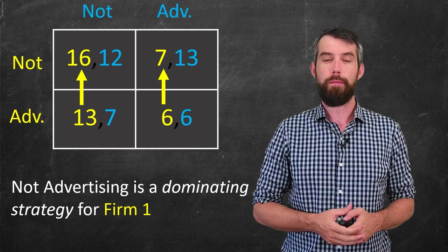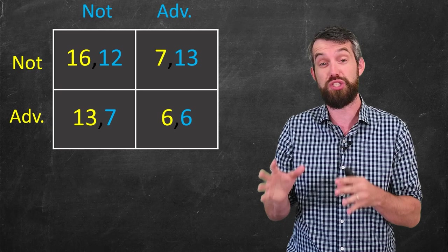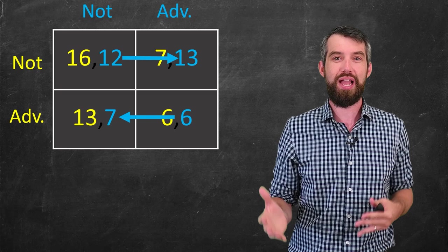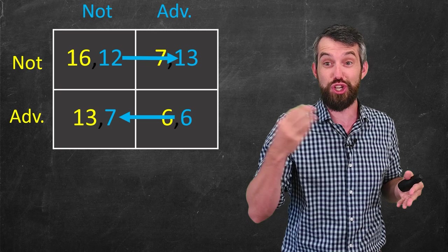Okay, so we know there's a dominating strategy for firm one. What about for firm two? Well, this is not so simple. Because if you look at the blue numbers, the second numbers, the numbers associated with firm two, the arrows actually go in opposite directions. That is, if you knew that firm one had not advertised, firm two should advertise. 13 is bigger than 12.